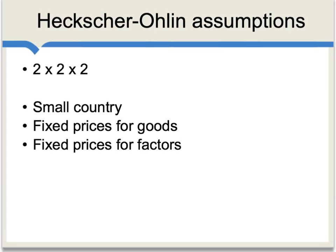All of this is going to be based in Heckscher-Ohlin-like assumptions, and you can review those in our Heckscher-Ohlin videos. Basically, we have a classic two-by-two-by-two model with two goods, two sectors, two factors of production, and two countries. In particular, we are dealing with an economically small country which does not influence world prices, meaning fixed prices for goods and also fixed prices for factors of production.